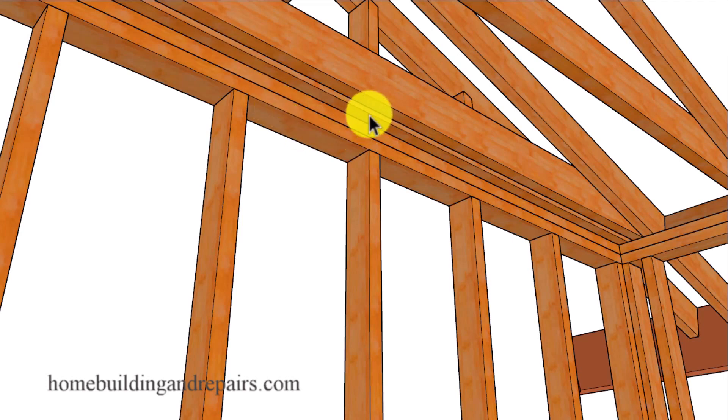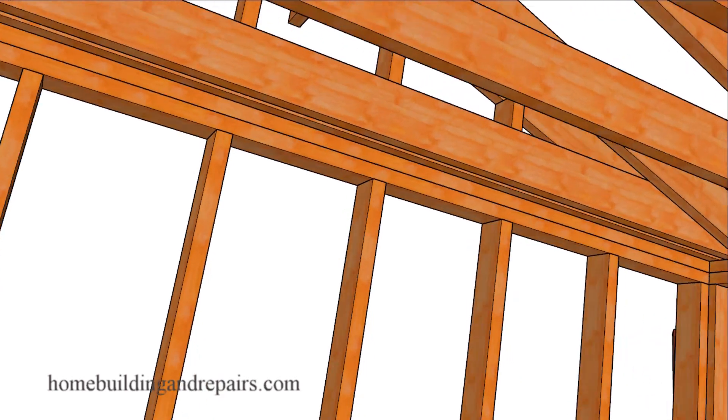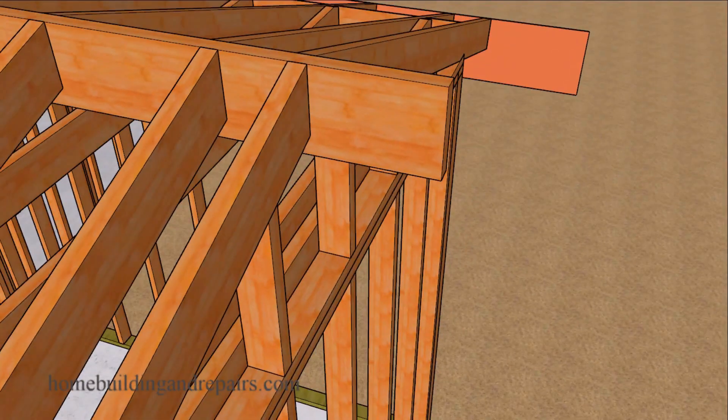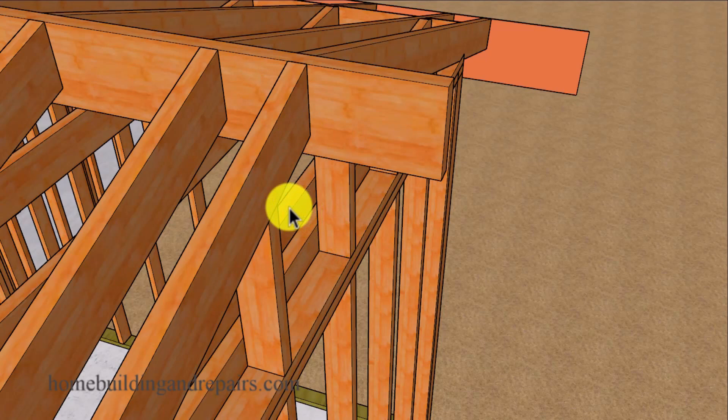Of course we will need some backing here, ceiling backing for the drywall. We can use a 2x4 for that instead of a larger piece of lumber like a 2x6 that we are using for our ceiling joist.